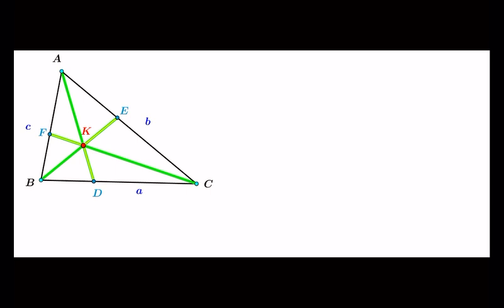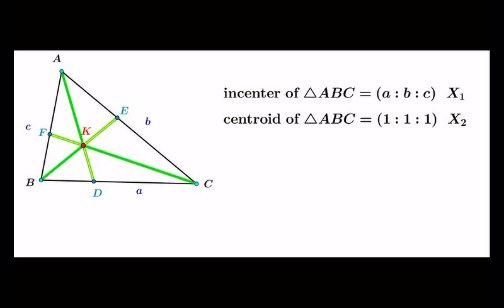One thing that makes barycentric coordinates a powerful geometric tool is that the barycentric coordinates of a multitude of points of interest are known. Given any triangle ABC, we will suffice it to mention the barycentric coordinates of incenter, centroid, and Lemoine point, that is the intersection point of its symmedians.